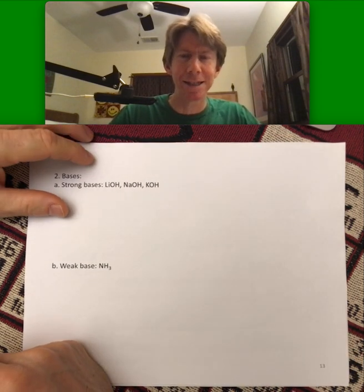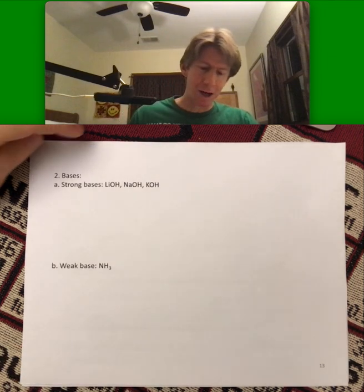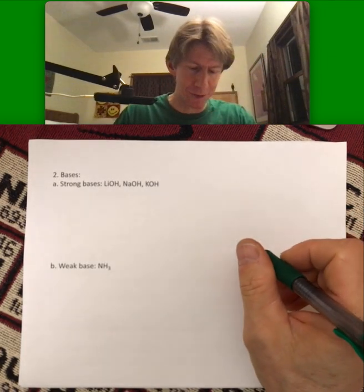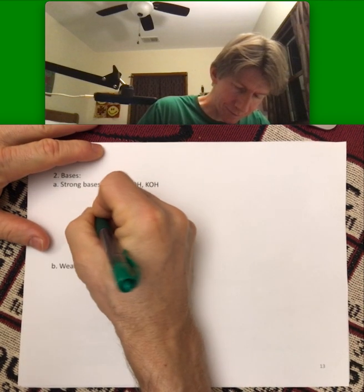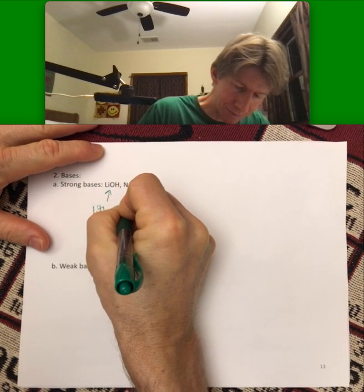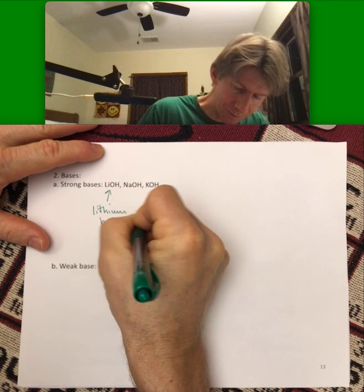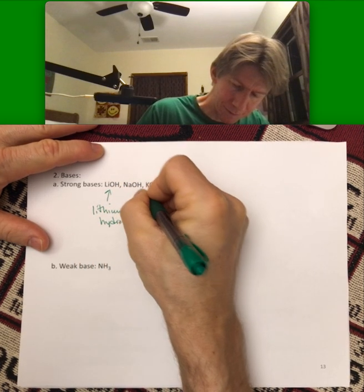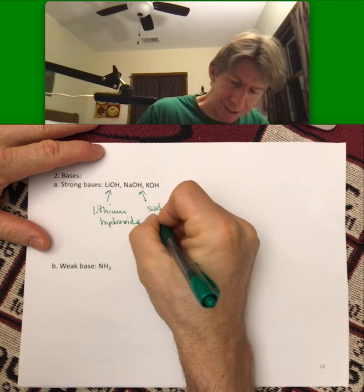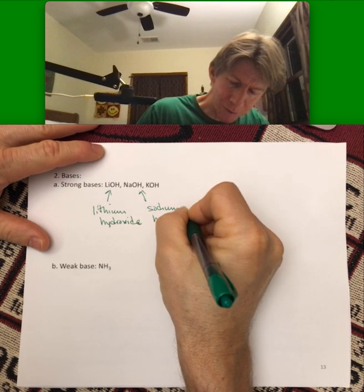Bases. Also many bases, many acids in the chemistry layers of the chemistry onion. Only three you have to know for the strong bases. And these are all ionic compounds, so they name just like other ionic compounds. Lithium hydroxide, sodium hydroxide, potassium hydroxide.